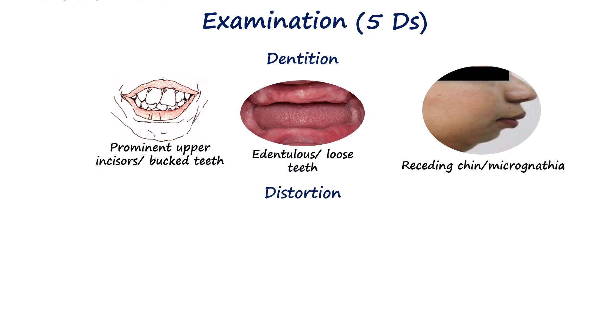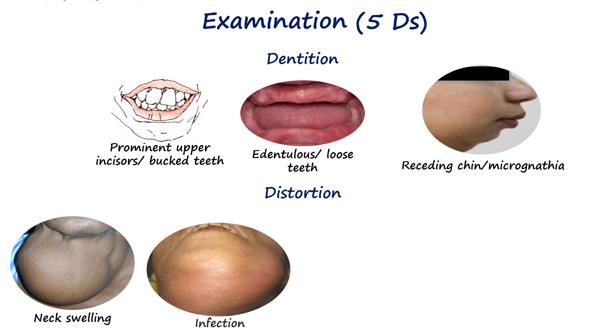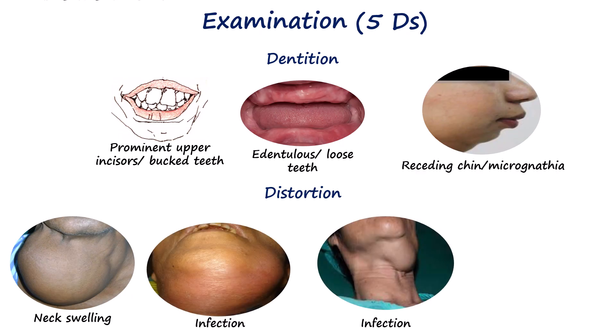The second D is distortion, which refers to anything that alters the normal anatomy, such as swelling, infection, tumors, or trauma.